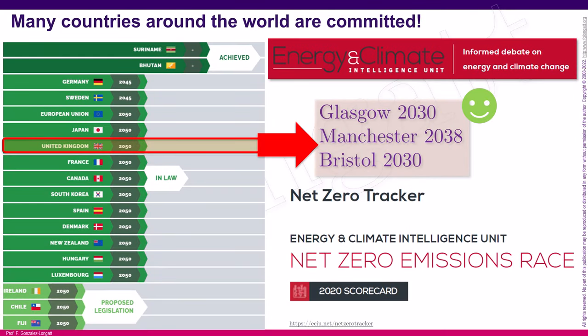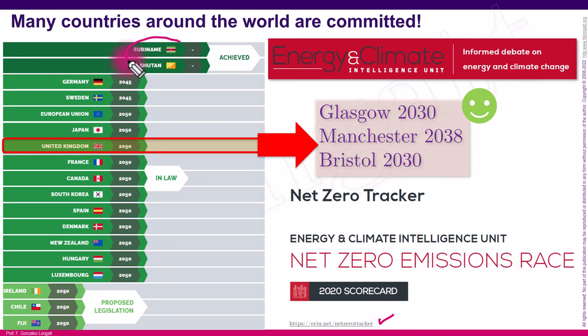we are in a climate emergency because the CO2 emissions that we are putting in the atmosphere are causing several troubles, and there is a forecast that these troubles will increase over time. Many countries around the world are already committed to reaching carbon neutrality. Looking at the net zero tracker website, there are several countries that have already reached net zero, like Bhutan or Suriname.